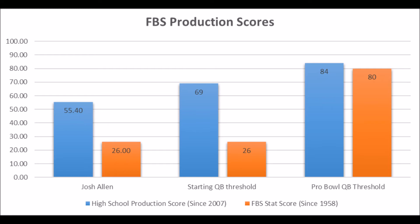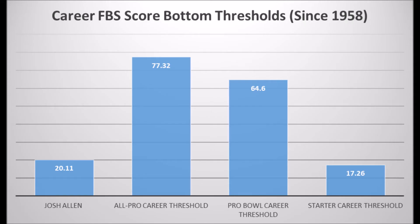What really scares you about Josh Allen is the averages in terms of his career. This is average FBS score data — you take all the performances of a quarterback in their college career, add them all together, and divide by however many years they played. When it comes to Josh Allen, his average career FBS score was a 20.11 out of 100. The bottom-end threshold for an all-pro potential player is 77.32 out of 100, 64.60 for a Pro Bowl player, and 17.26 out of 100 for a starting player. So Josh Allen really fits the bill as a fringe starting quarterback at the NFL level.